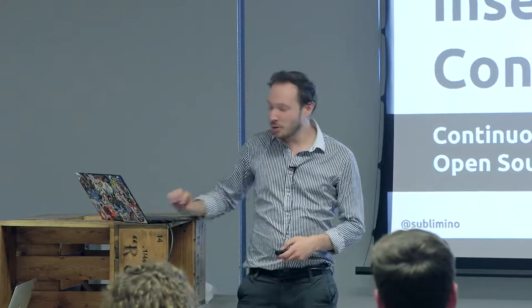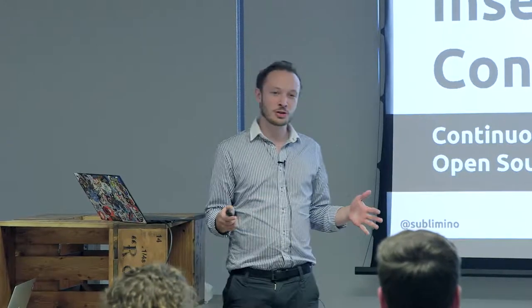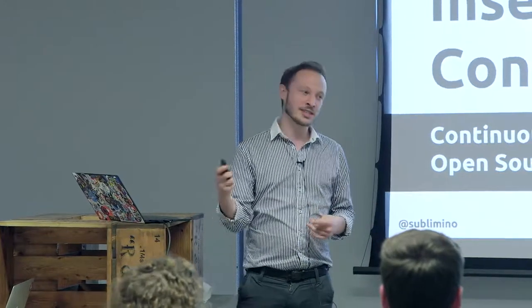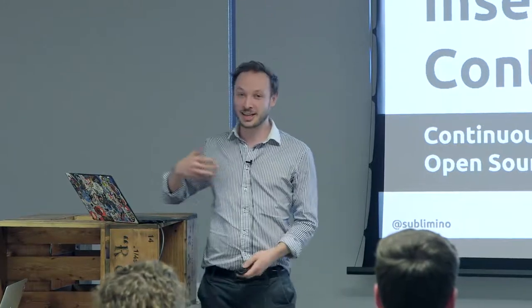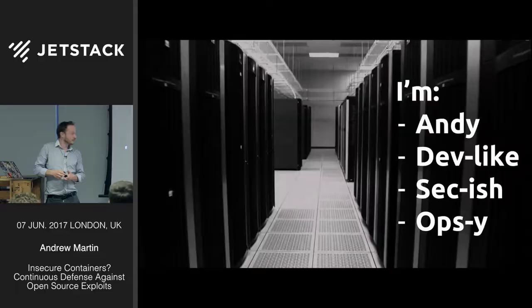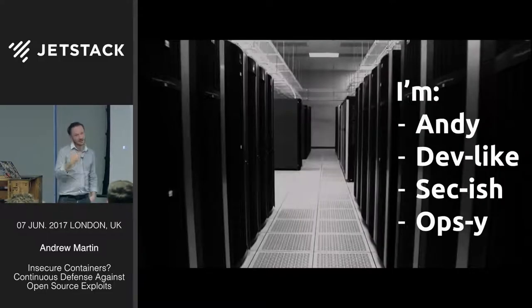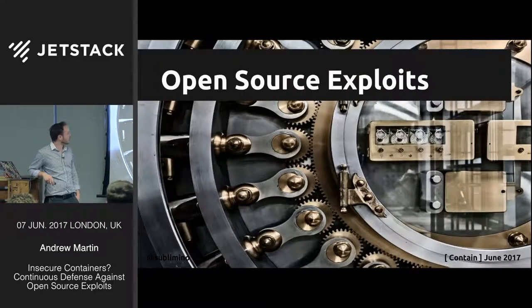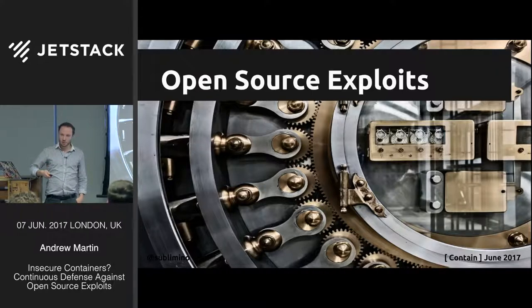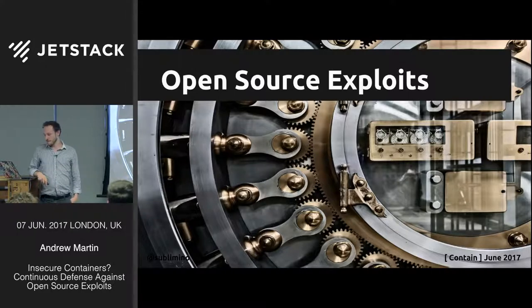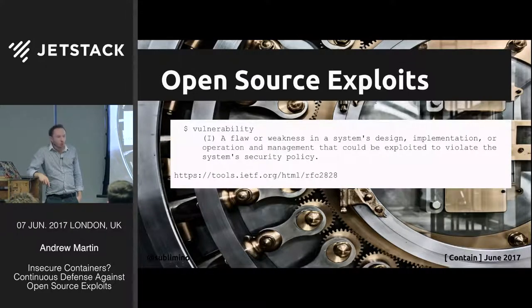Hello everybody. I've got quite a lot of content — this is a bit of a longer talk, but instead of cutting things out I'm going to skip over some bits with brief descriptions and leave it in the slides. I'm Andy, and I want to talk about vulnerabilities in open source software, how they're exploited, and how containers can protect us. A vulnerability is a flaw or weakness that can be exploited to violate a system's security policy.